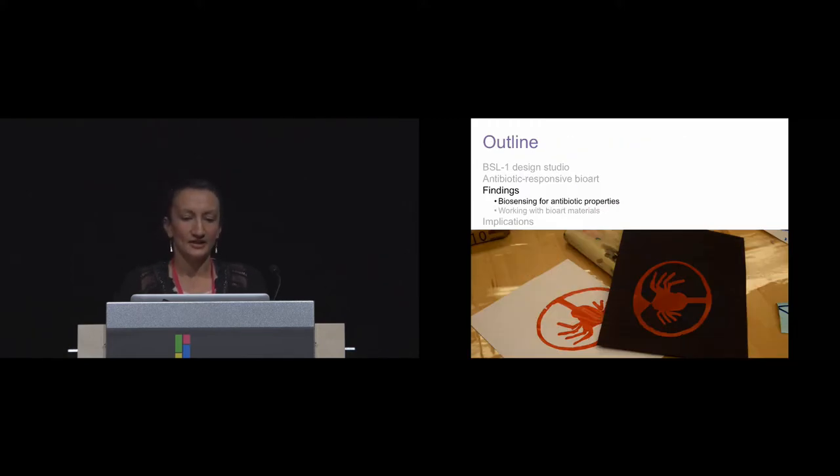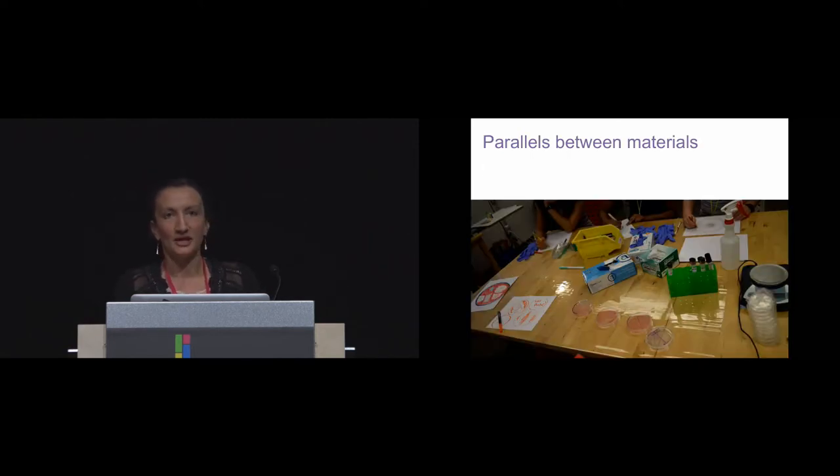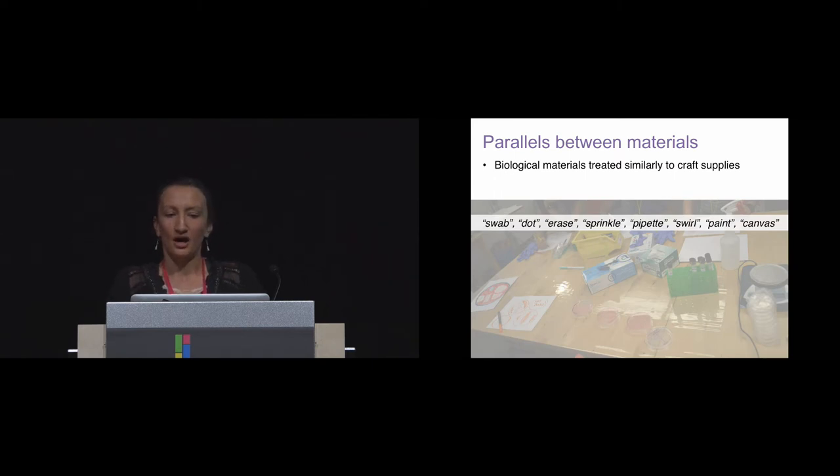Throughout the biosensing activities, we tried to support a studio-style work session. Because of this, it is very interesting to think about the way that the work with the hybrid bio art materials unfolded. So first, there were many parallels between the bio and non-bio materials in our studio. Students often talked about the biological materials in the same way that they talked about other craft supplies that were available in the lab. For instance, words like swab, dot, erase, which is an interesting word to apply to bacteria, paint, pipette, sprinkle. These words were used interchangeably when talking about all the different materials that were available.